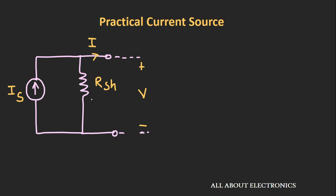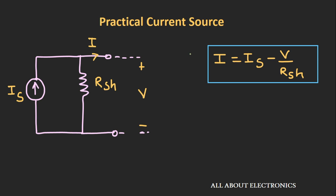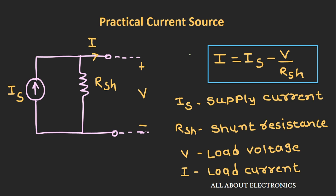Apart from that, the practical current source has a shunt resistance in parallel with the current source. The current I that is actually delivered to the load can be given as I = IS − V/RS, where IS is the supply current, RS is the shunt resistance, V is the voltage that appears across the load, and I is the current that is flowing through the load resistance.